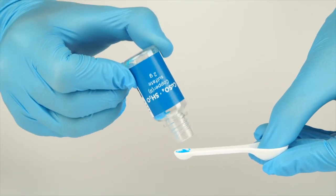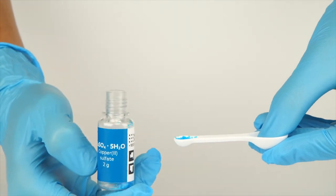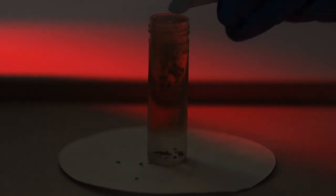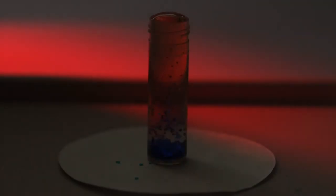Prepare a small spoonful of copper sulfate and turn out the lights. Add the copper sulfate to the vial and watch what happens.